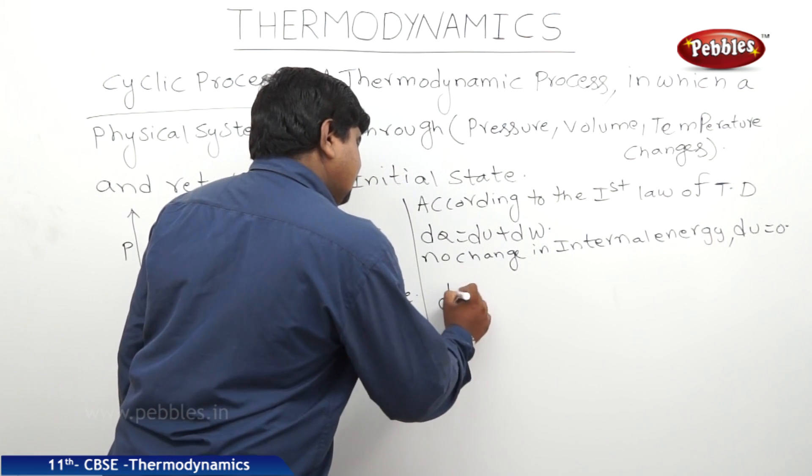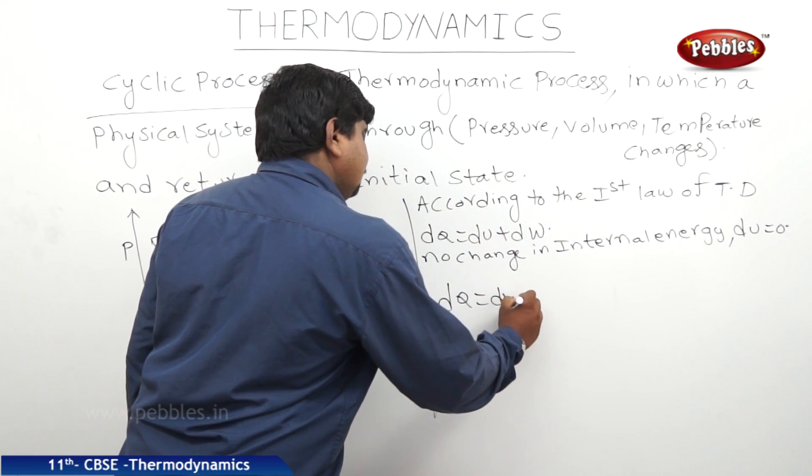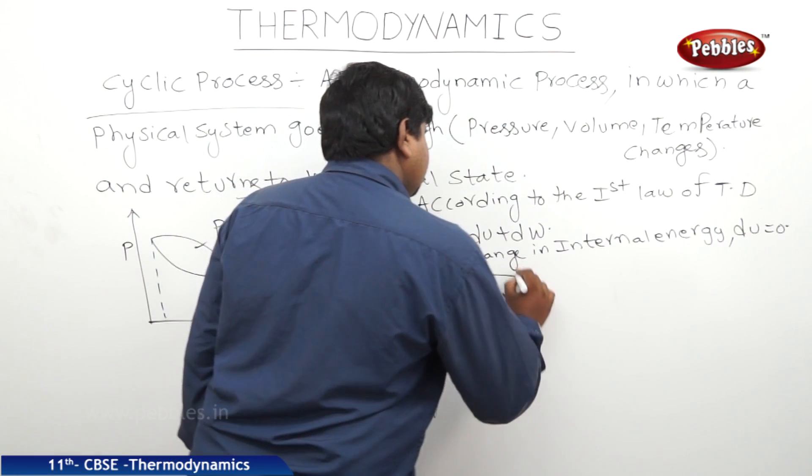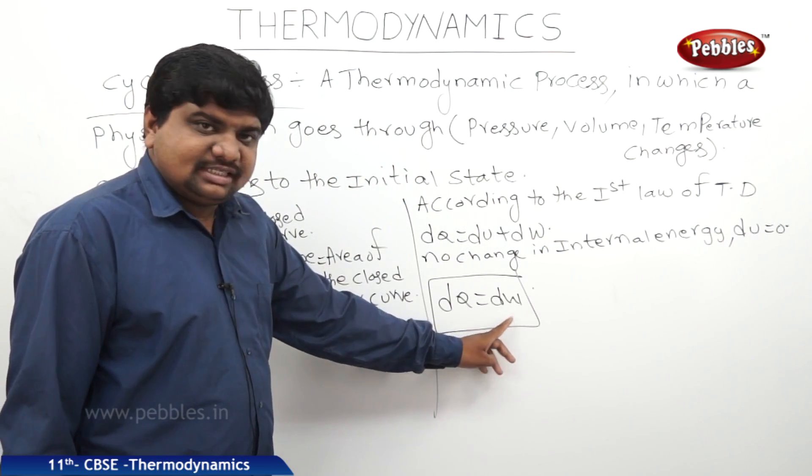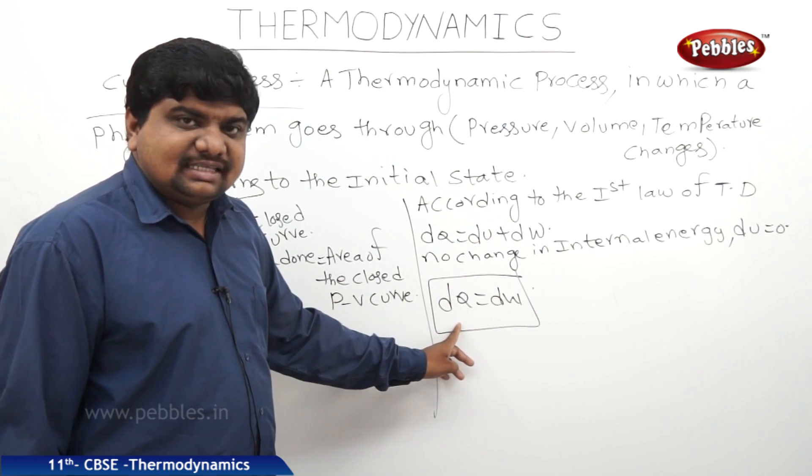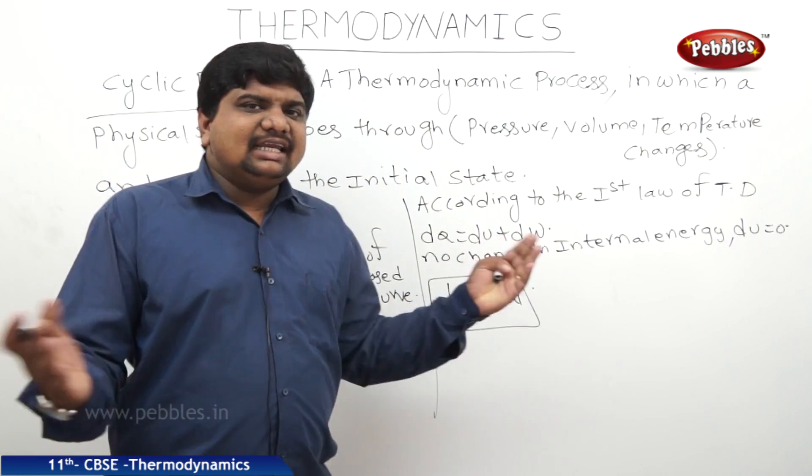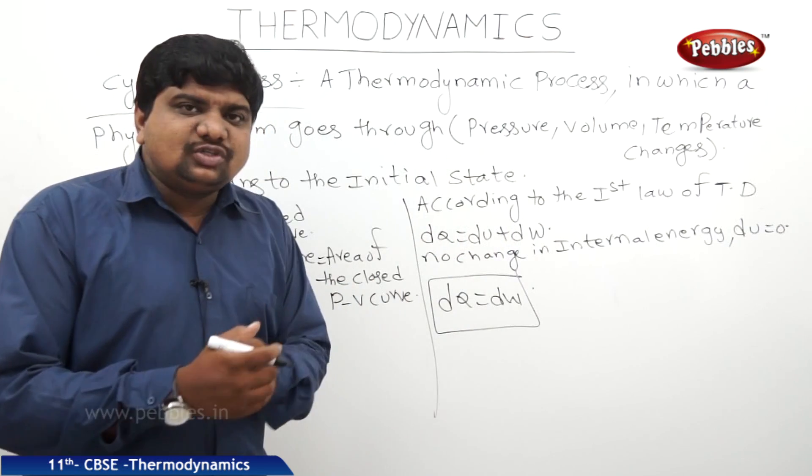Therefore, DU will become 0. Therefore, this equation will get DQ is equal to DW. The amount of work done in a cyclic process is equal to the amount of heat energy supplied, but it is an ideal case and may not be possible in whole-soul conversion.